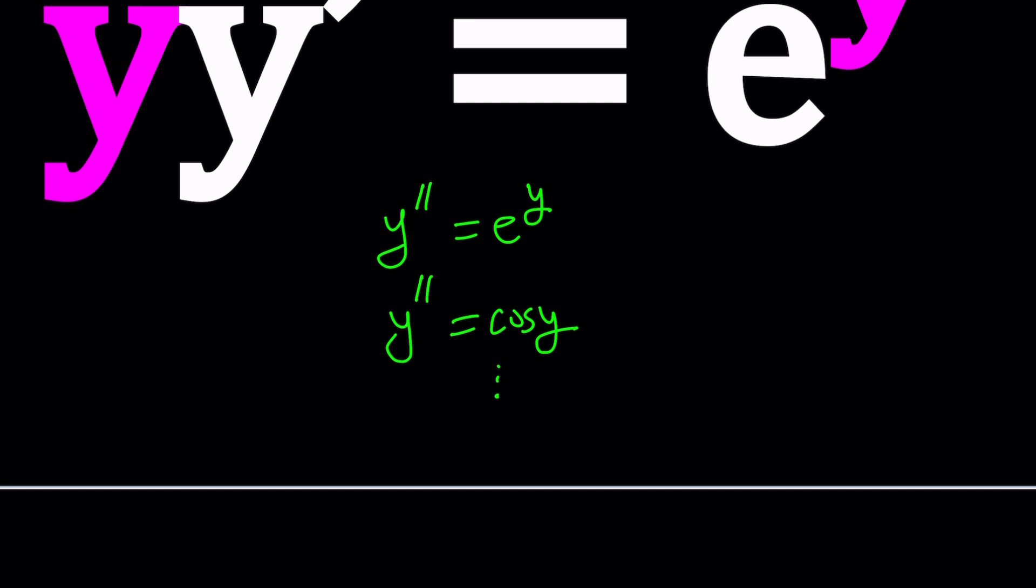If you know how many examples of these types, like where you have the y double prime written as a function of y, let us know in the comment section down below. So, hopefully something with a good solution. Okay, great.